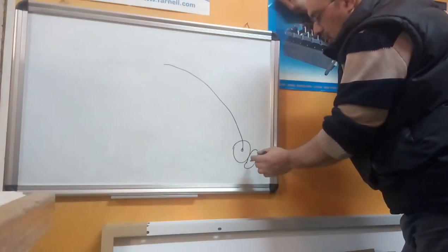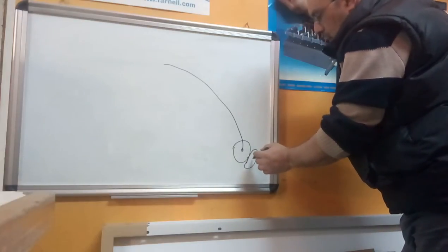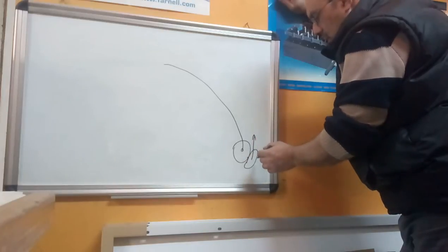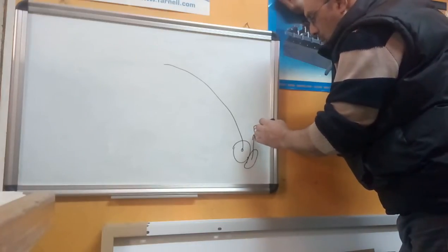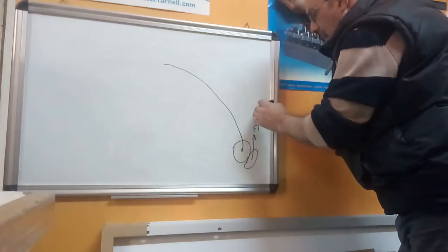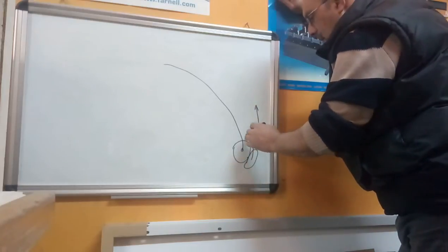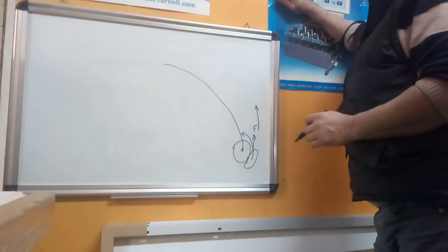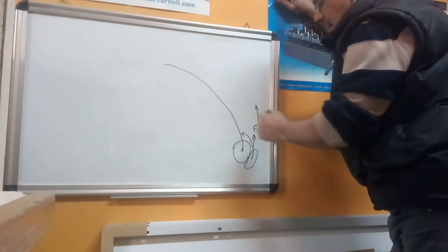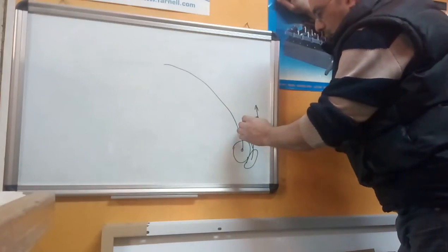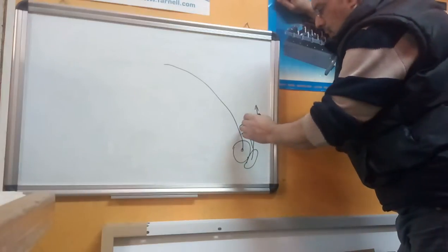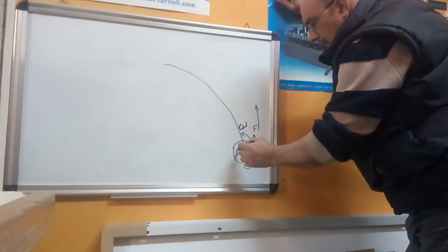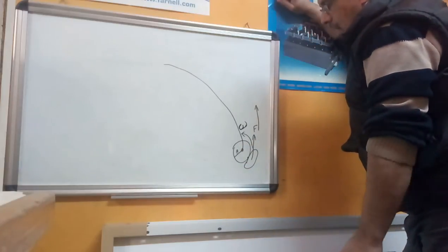The player kicks the ball at a certain point, which exerts two kinds of forces: a force that makes the ball go into a straight line, and at the same time makes the ball rotate around its axis with a certain rotational speed — let's call it Omega. The radius of the ball, let's take it as R.